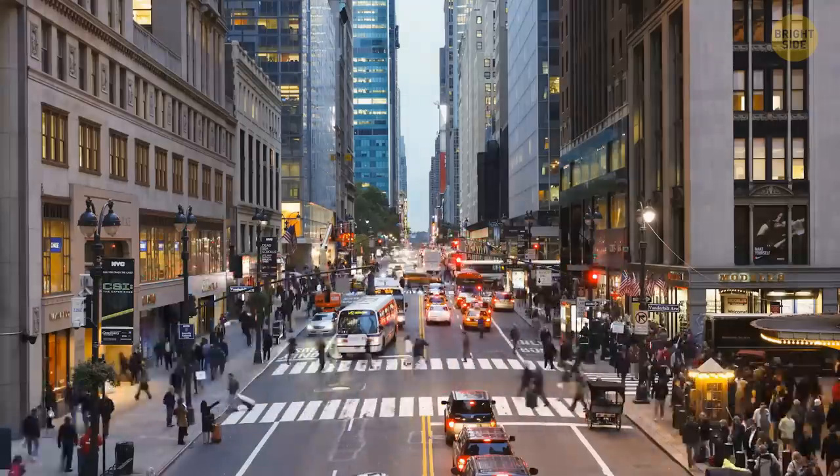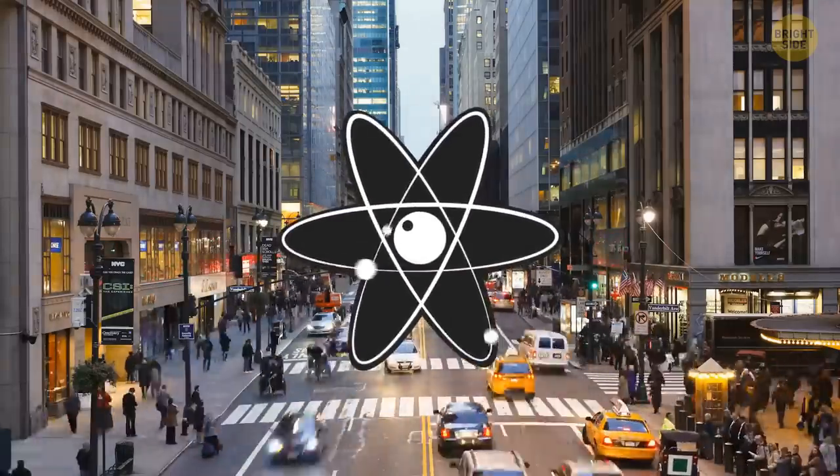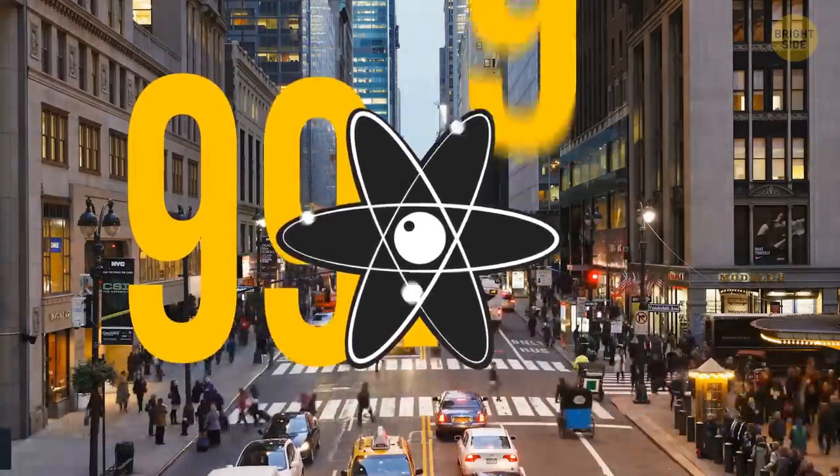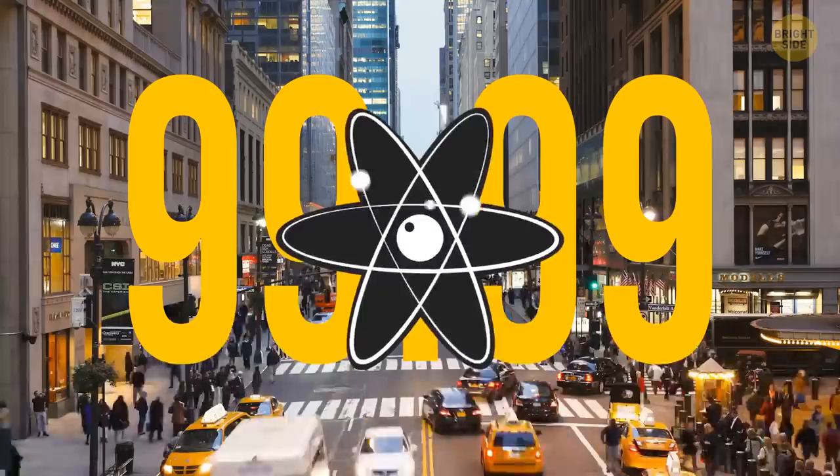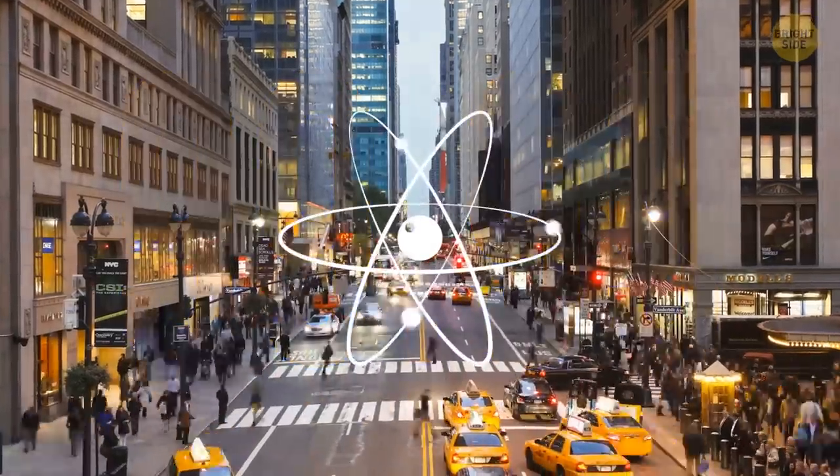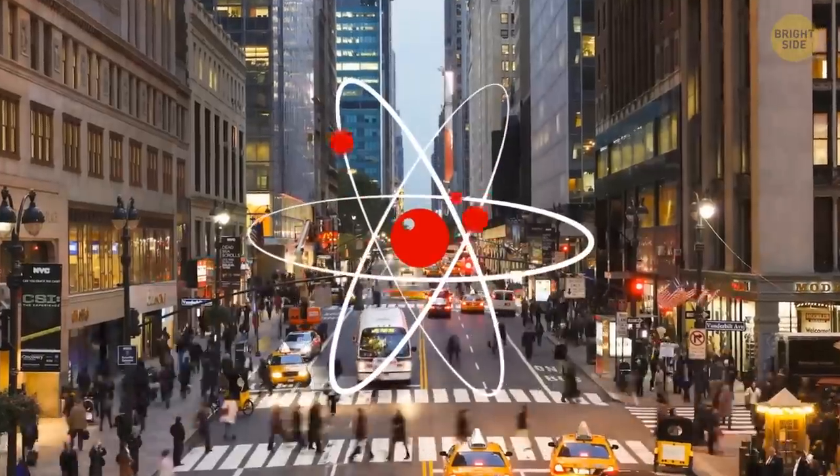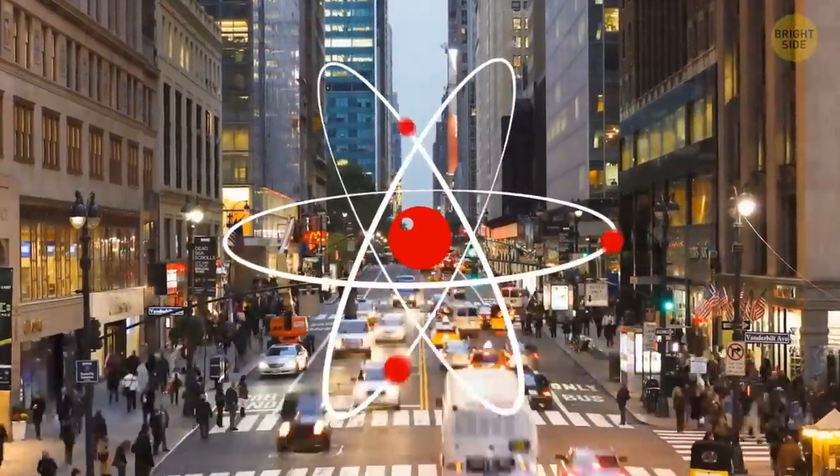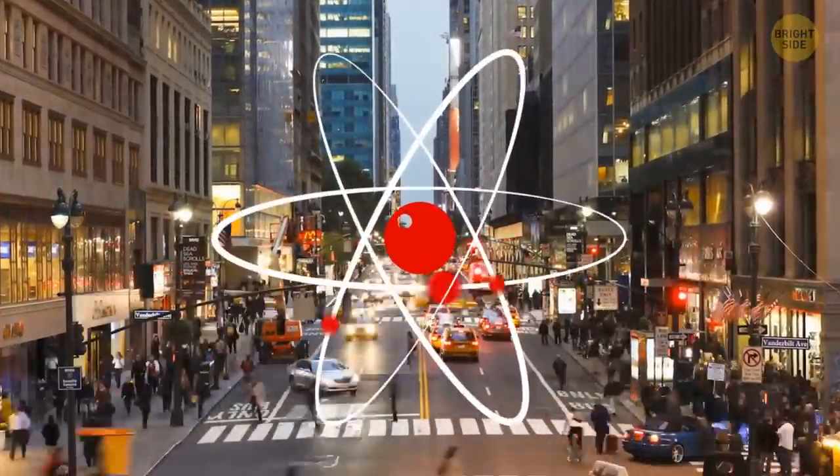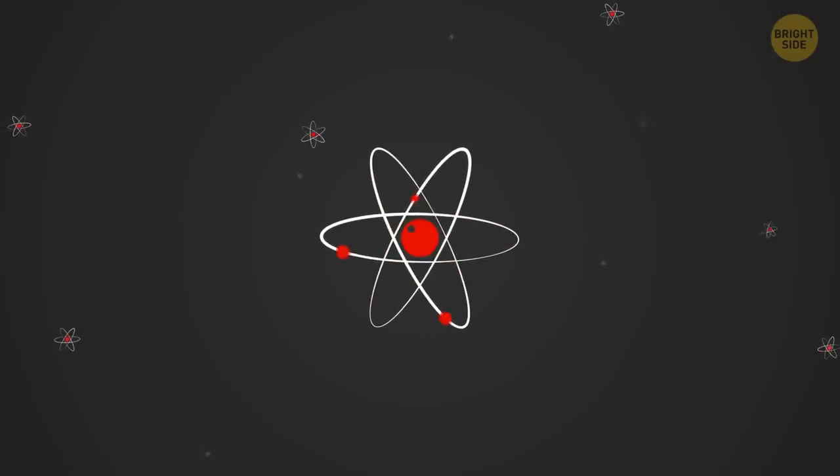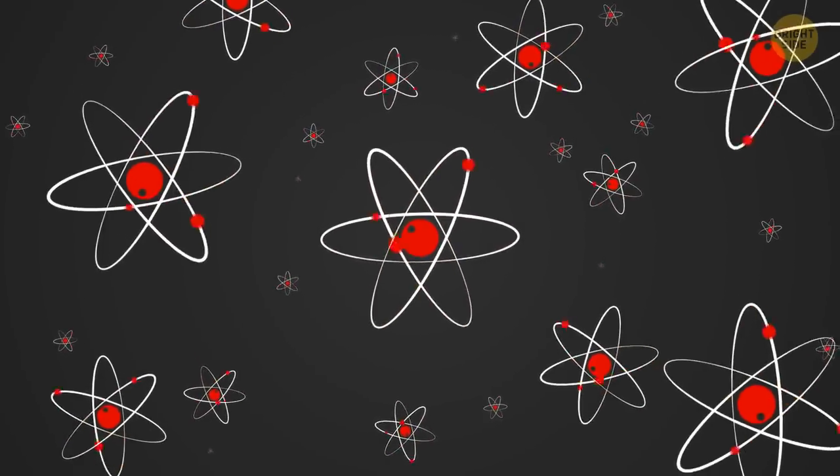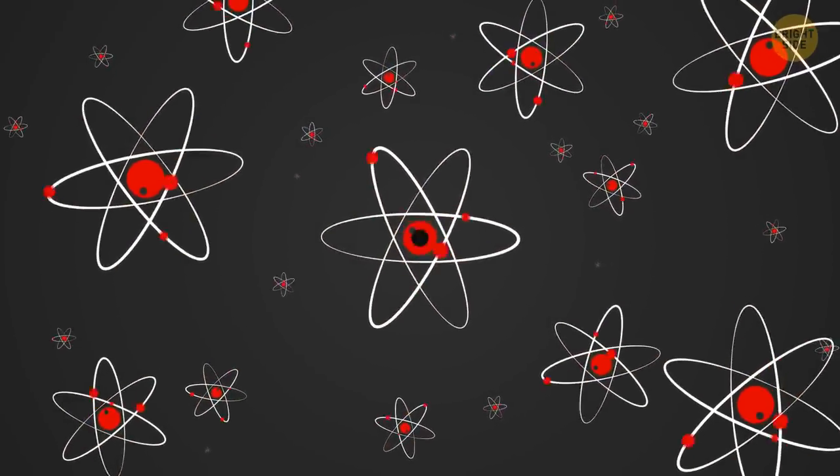The world that surrounds us consists of atoms, and they seem to be solid. But 99.99% of them are just empty space. An atom is just a really small nucleus and a cloud of electrons surrounding it. These electrons are particles, but they act like waves. They don't exist in one point but are spread over a range of probabilities and occupy lots of space.